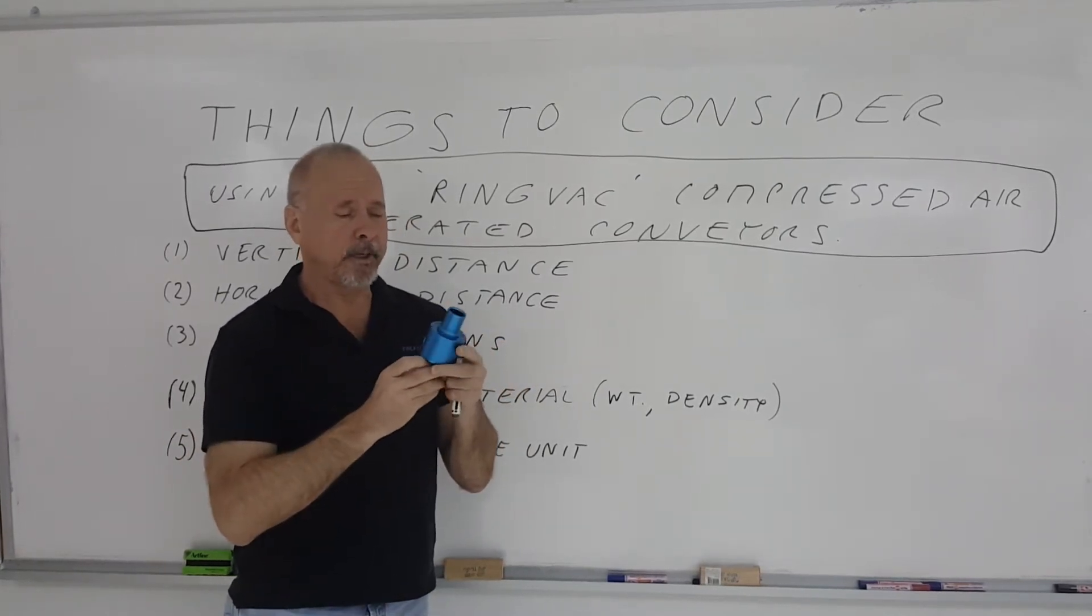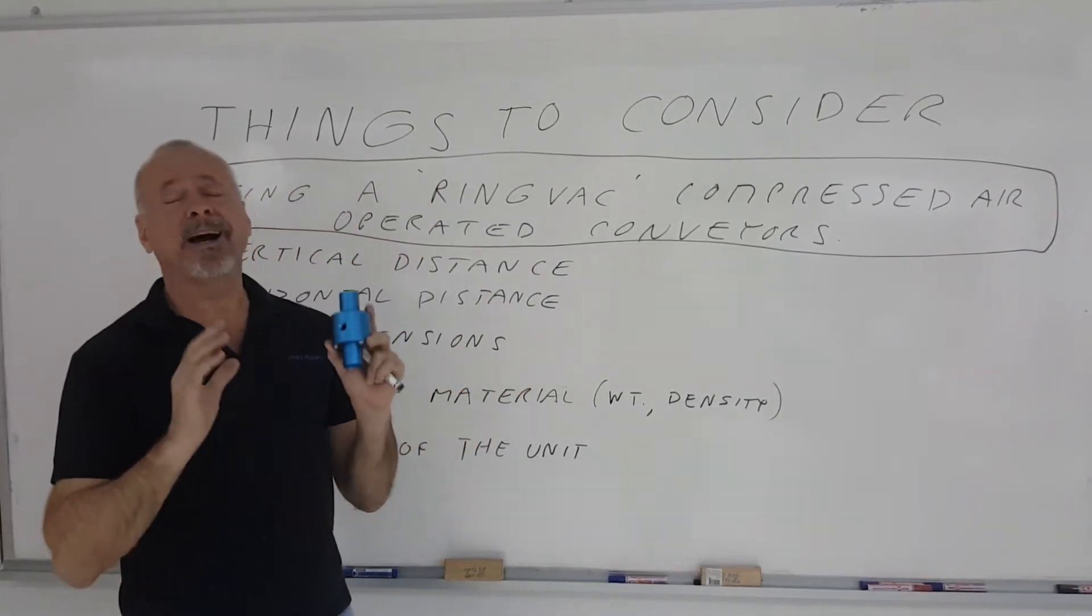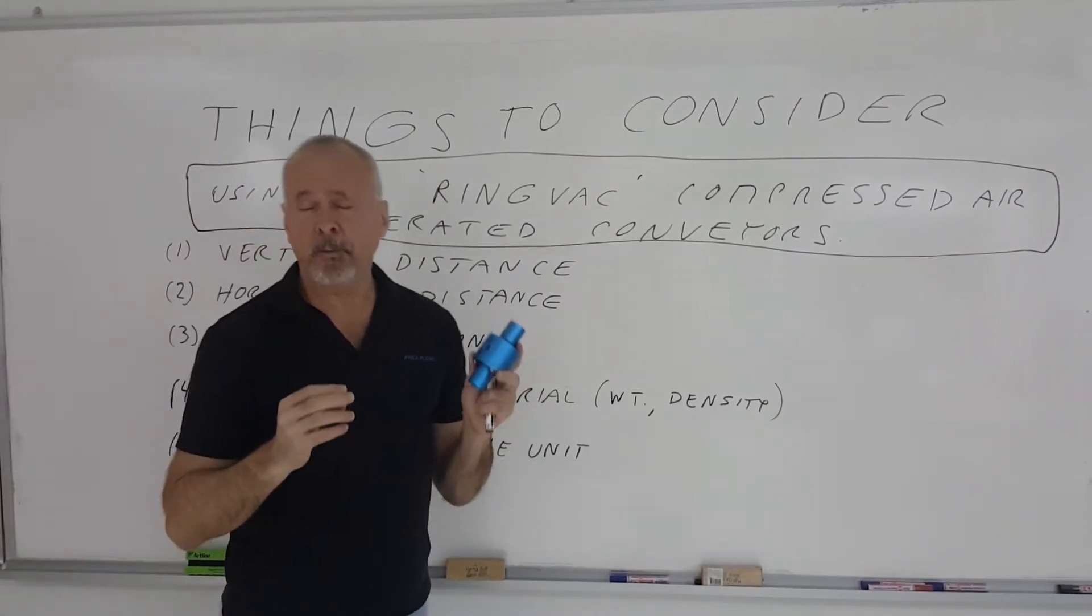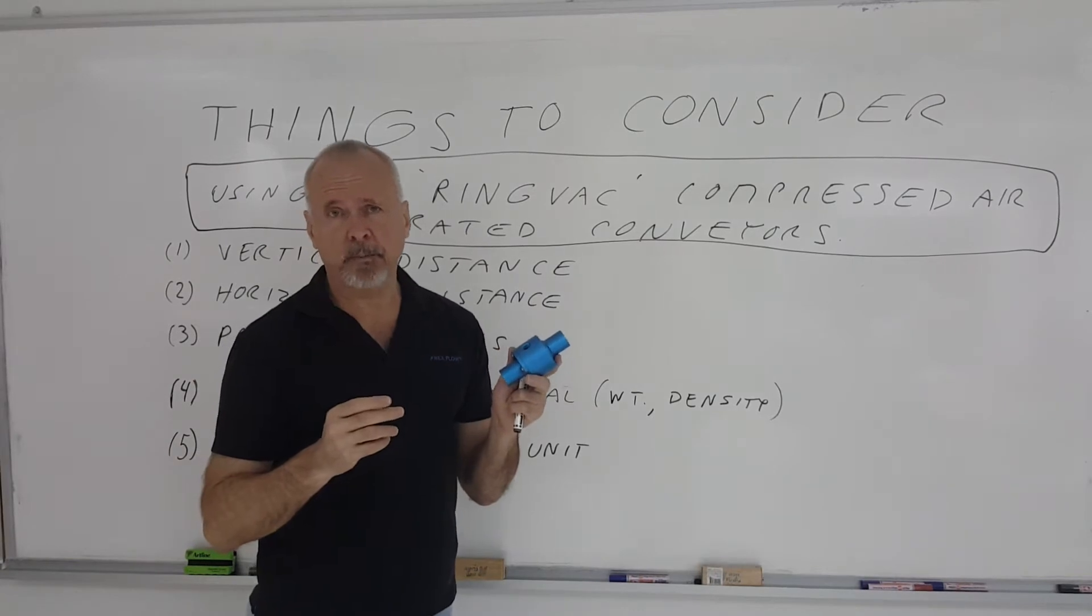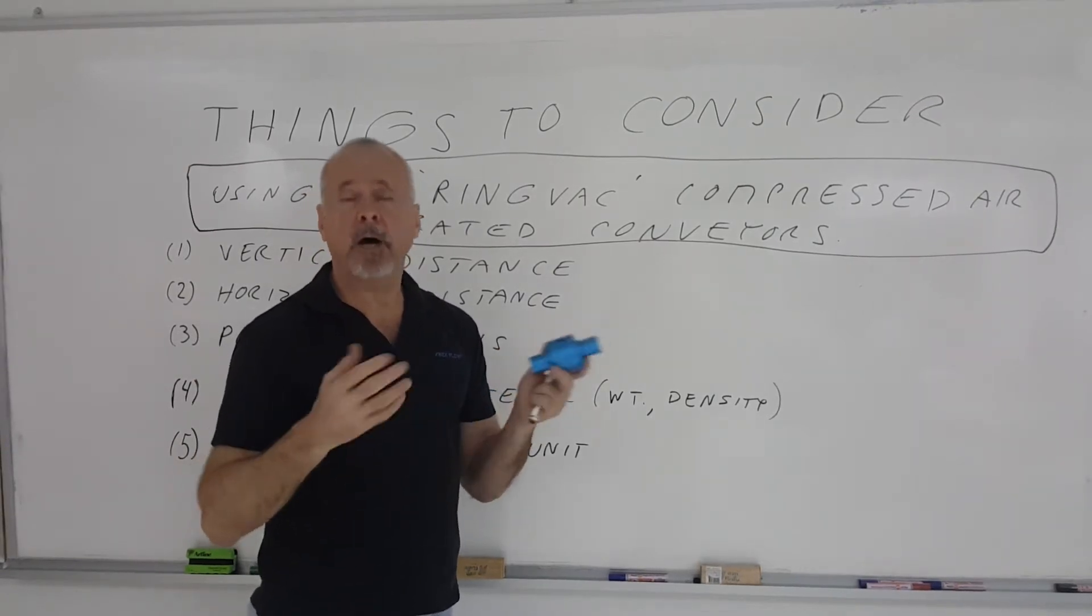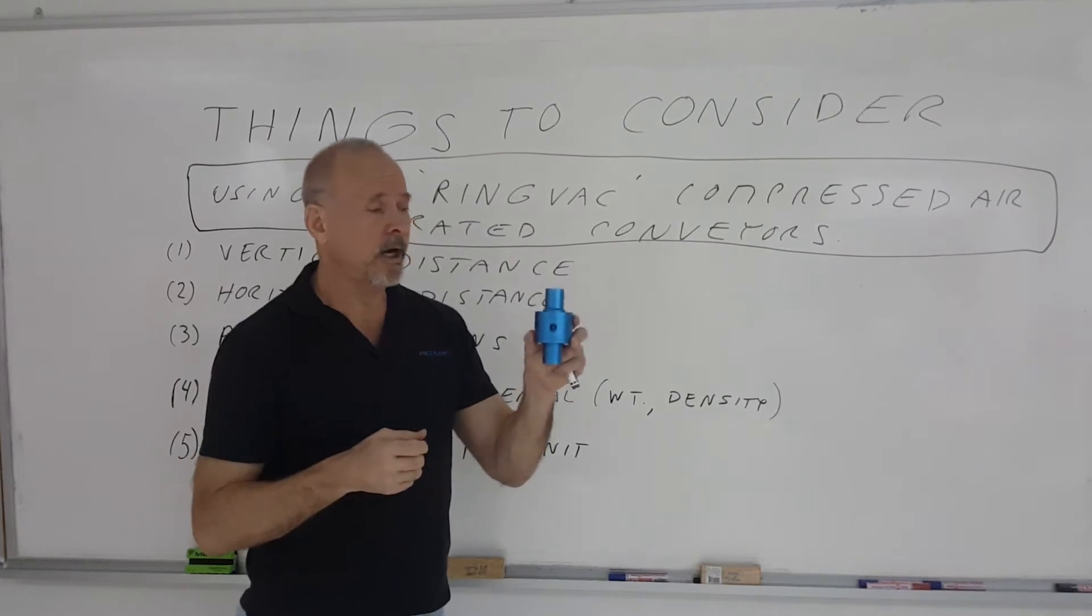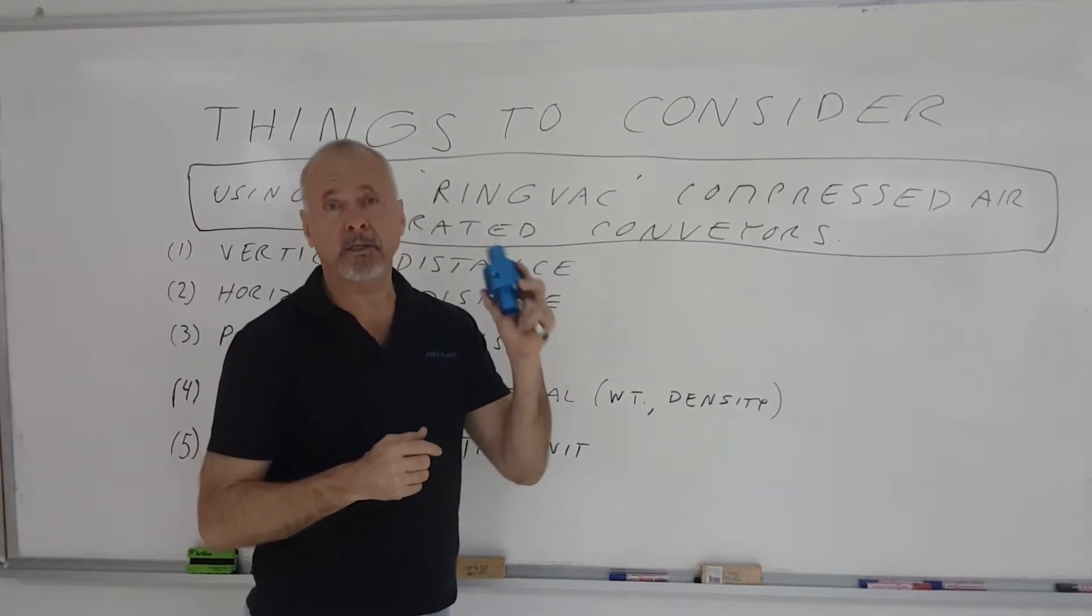If you have an intermittent application, these things are ideal. One very popular application, for example, is loading resin into hoppers on injection molding machines. They're very compact, instant on, instant off.